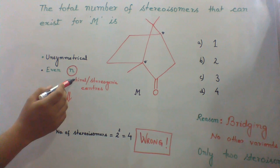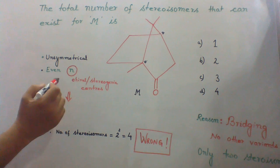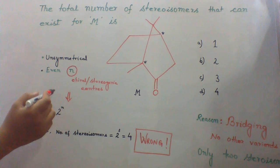Chiral centers are those centers to which four different groups or four different ring residues are attached.